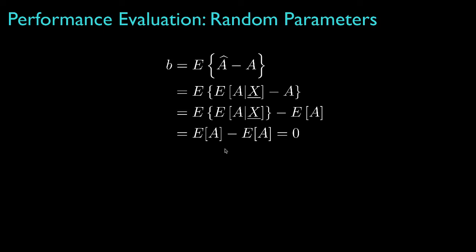So the bias for the minimum mean square error, or conditional mean estimator, is always equal to zero. Therefore, the minimum mean square error estimator is always unbiased.